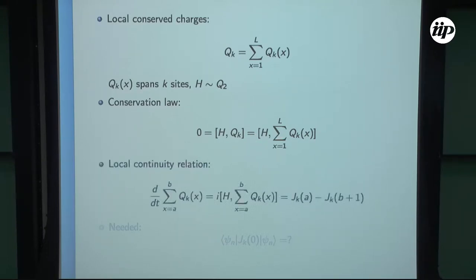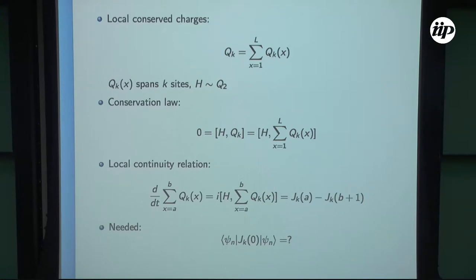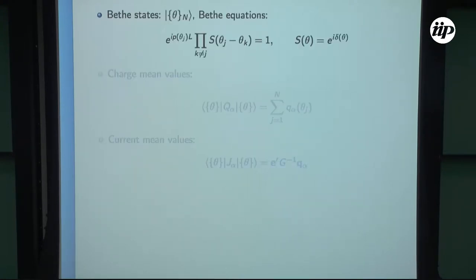For the local continuity relation, we ask in the Heisenberg picture: what is the time derivative of the summed-up charge density over an interval from A to B? The time derivative is given by a commutator, and as an effect of the global conservation law it can be written as a difference of two current operators positioned at the two boundaries. This commutation relation serves as a definition for the current operators associated to these charges. We want to compute, in finite volume, the mean value of the current operators in any excited state of the model.